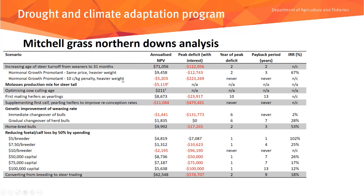When we've done analyses for many different strategies, we produce a comparison table showing annualised NPV, peak deficit with interest, year of peak deficit, payback period, and internal rate of return for each strategy. For the Mitchell Grass Northern Downs analysis, strategies examined include turning off weaner steers versus an older age of turn-off, hormonal growth promoters, feeding a molasses production mix, optimising cow culling age, first mating heifers as yearlings, supplementing first-calf heifers for better reconception rate, genetic improvement of weaning rate through bull selection, home breeding and objectively selecting bulls, reducing foetal calf loss, and converting from breeding to steer trading.